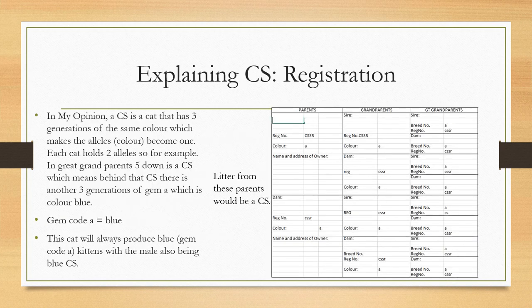The example below shows you three generations of blue. It also shows you a grandparent that is a CS as well, which will also hold another three generations of blue behind that. This is a CS — a blue CS — and this is roughly what its pedigree should look like.